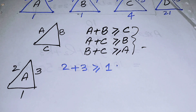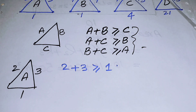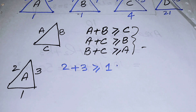A degenerate triangle is any triangle that has all three vertices on a straight line. You may already know the concept of a degenerate matrix — the degenerate triangle is a similar concept. All three vertices collapse onto a single line.